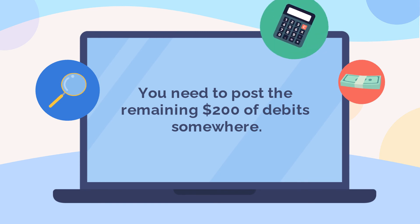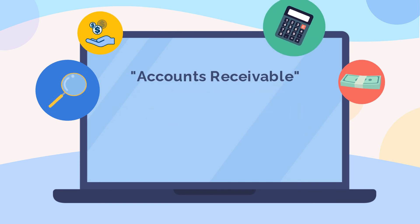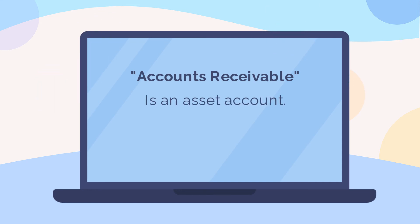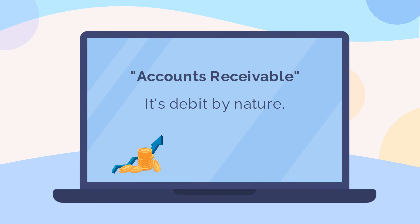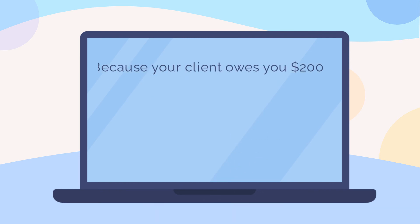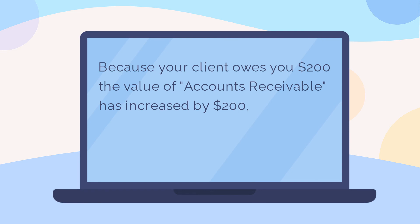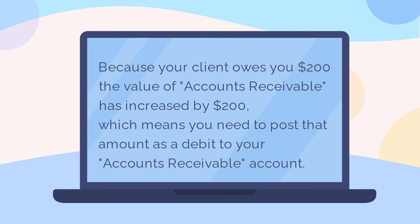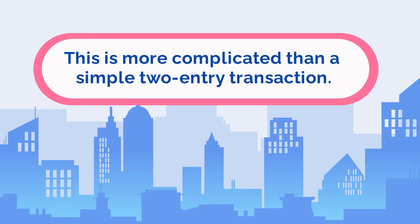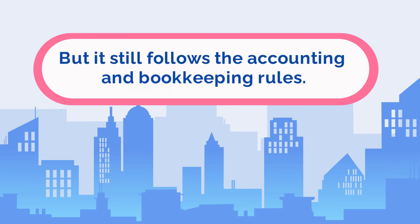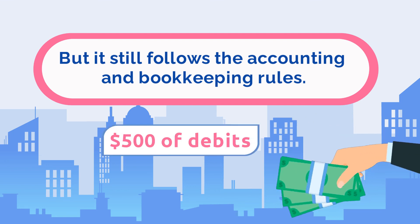You need to post the remaining $200 of debits somewhere, and the place to do that is the Accounts Receivable general ledger account. Accounts Receivable is an asset account used to keep a record of money that is owed to you. Because it's an asset, it is debit by nature, so when it increases in value, you need to post a debit entry. Because your client owes you $200, the value of Accounts Receivable has increased by $200, which means you need to post that amount as a debit to your Accounts Receivable general ledger account. So effectively, the $500 debit side of the sale transaction has been split into two entries — a $300 debit to Cash at Bank and a $200 debit to Accounts Receivable. We still end up with $500 of debits and $500 of credits.